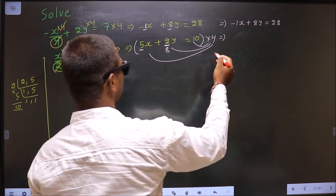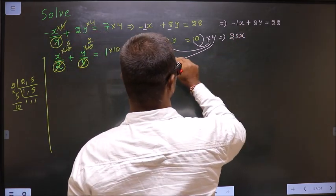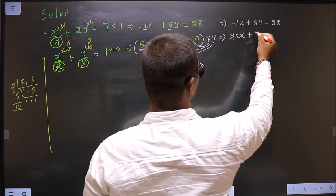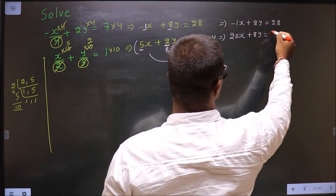So 5x into 4 is 20x, plus 2y into 4 is plus 8y, equal to 10 into 4 is 40.